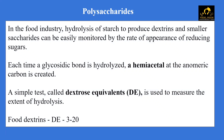There is a simple test called dextrose equivalent (DE), which is used to measure the extent of hydrolysis. If a starch solution has a DE value of 0, that means no hydrolysis has occurred. If a starch solution has a DE of 100, then all the glycosidic bonds in that solution have been hydrolyzed. In food industries, food dextrins with a DE value of 3 to 20 are used.